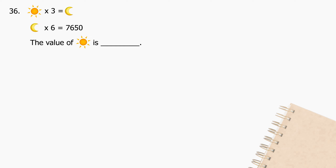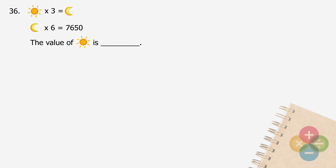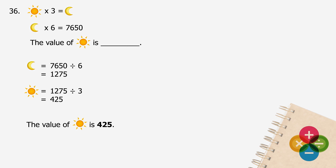Question 36: Sun multiplied by 3 equals Moon. Moon multiplied by 6 equals 7,650. The value of Sun is blank. The value of 1 Moon will be 7,650 divided by 6, and the quotient is 1,275. The value of 1 Sun will be 1,275 divided by 3, and the quotient is 425. The value of Sun is 425.